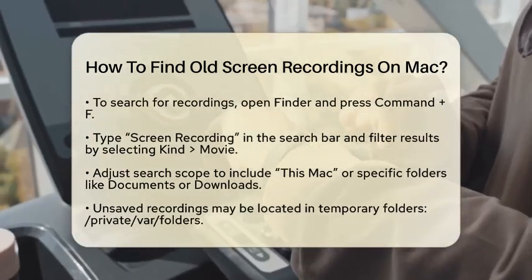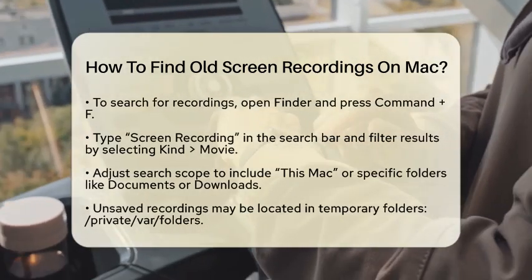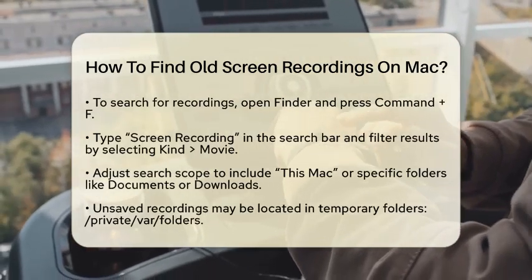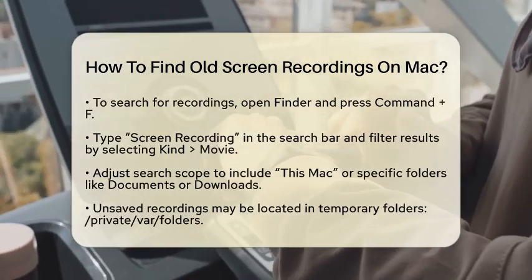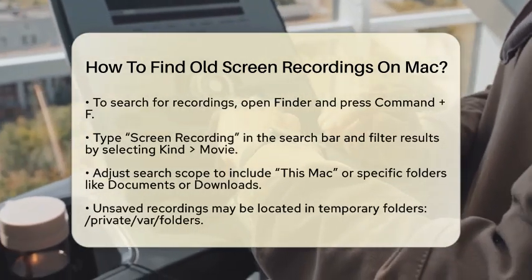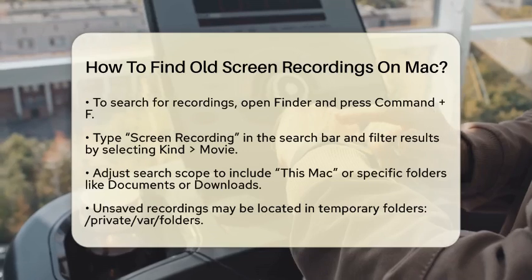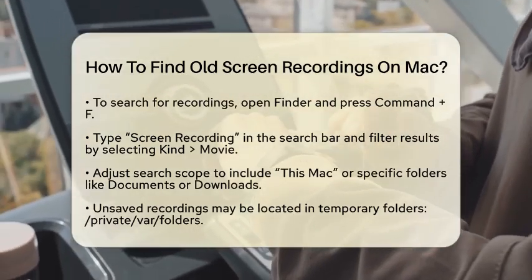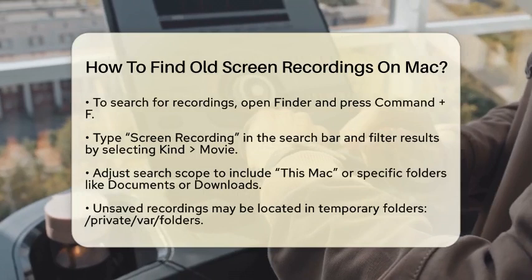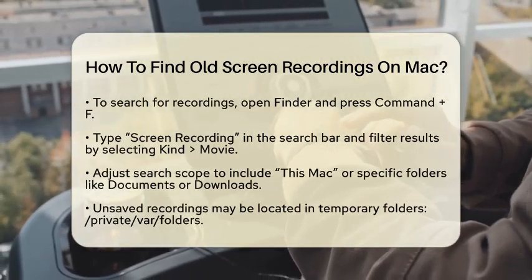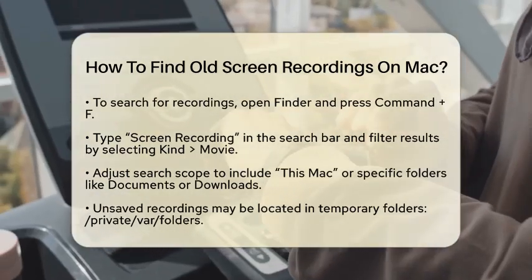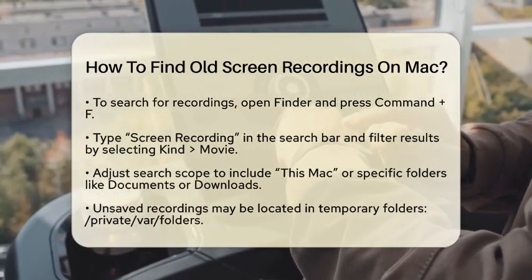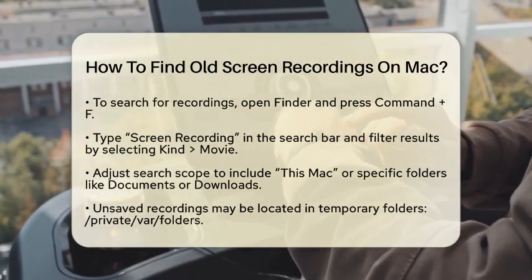Next, if you want to search for your recordings, open Finder and press Command and F to start a search. In the search bar, type Screen Recording. You can filter the search results by selecting Kind and then Movie. This will help you narrow down the files you are looking for. Make sure to adjust the search scope to include this Mac or specific folders like Documents or Downloads. This way, you can cover all your bases.